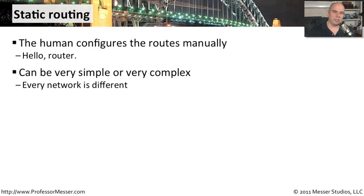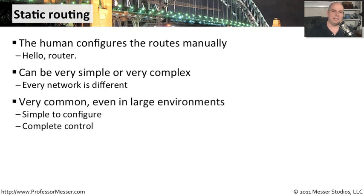A simple configuration would be: leave everything here in this local network unless you're going to the internet, and then go out to this internet port. There could be really one single route inside your router that says keep everything local except for internet traffic, and then you go out this default route. Static routing, although it seems very complicated to set up and like there's extra effort involved, is actually a very common thing, especially when you get into very large environments.